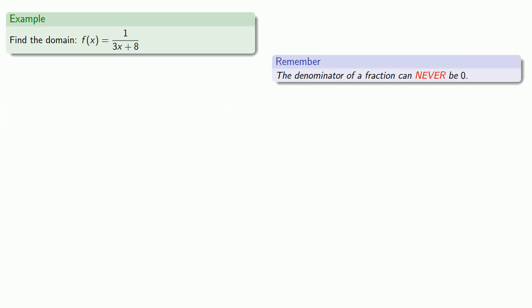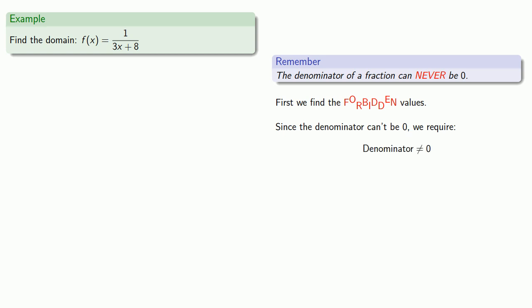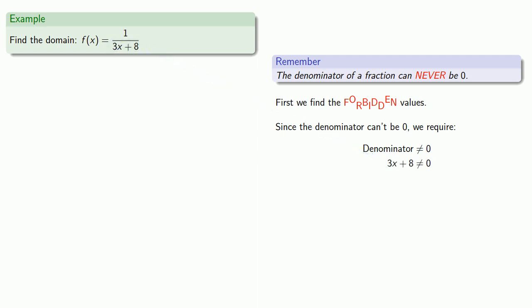So first, we'll find the forbidden values. Since the denominator can't be zero, we require the denominator not be equal to zero. Since our denominator is 3x + 8, we require 3x + 8 not equal zero.